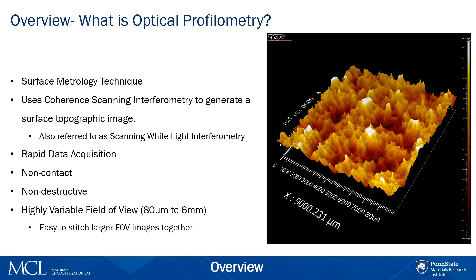What is optical profilometry? In general terms, it's a surface metrology technique, meaning that it is used to measure properties of surfaces such as roughness and topography. Optical profilometry utilizes something called coherent scanning interferometry to generate topographic images of a surface, sometimes also referred to as scanning white light interferometry. This allows for rapid data acquisition across many fields of view.